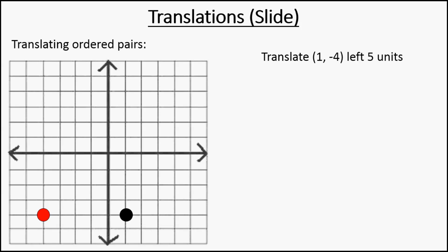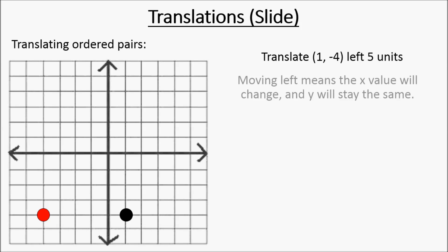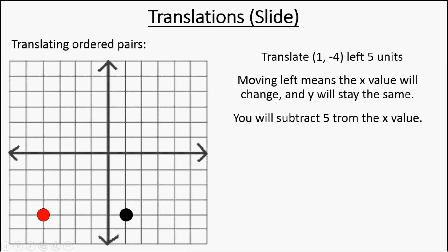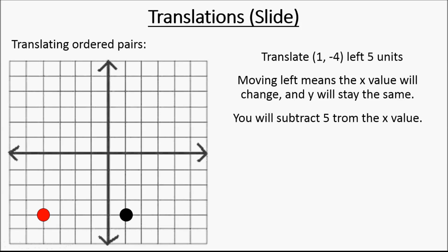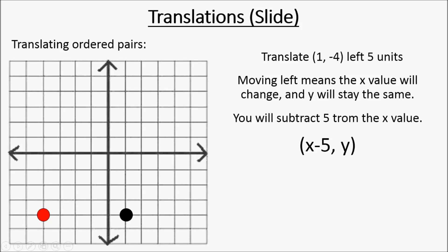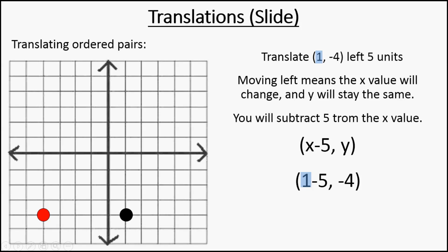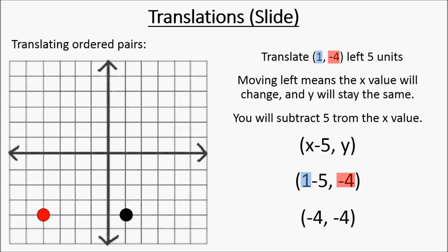So the red dot is the new location for that point. Moving left means the x-value will change and y will stay the same. We're going to subtract five from the x-value. Moving left is a negative direction for the x-axis. So basically we're doing x minus five and keeping y as it is. We've got one minus five — one being the original x-value — and negative four is the original y-value, which is not going to change. So our new location is at negative four, negative four. That red dot is at negative four, negative four.